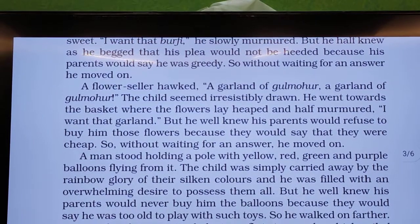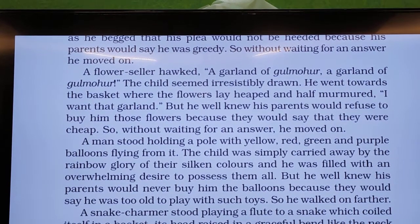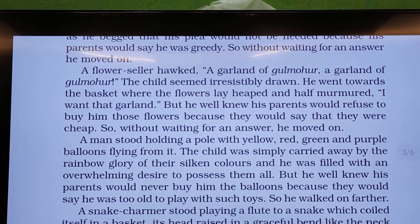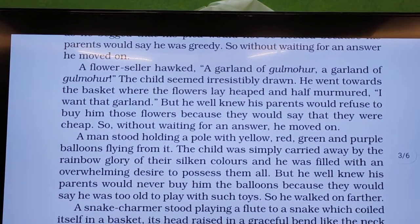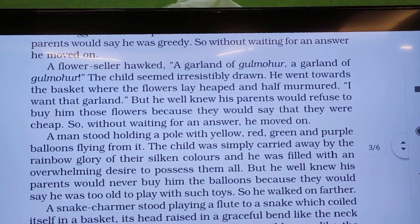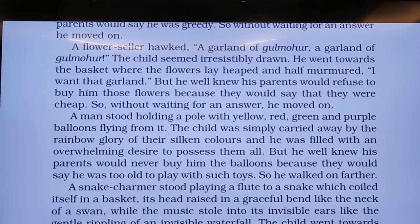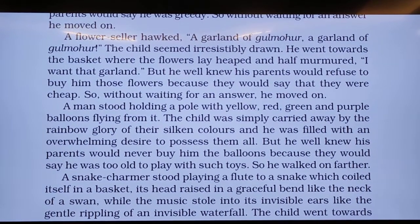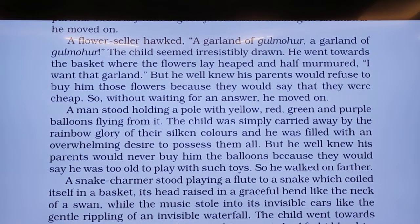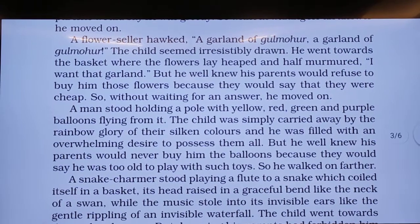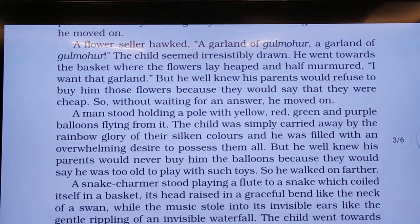A man stood holding a pole with yellow, red, green, and purple balloons flying from it. The child was simply carried away by the rainbow of glory of the silken colors and filled with an overwhelming desire to possess them all. But he well knew his parents would never buy him the balloons because they would say he was too old to play with such toys — 'you are too grown up to play with balloons.' So he walked on further.